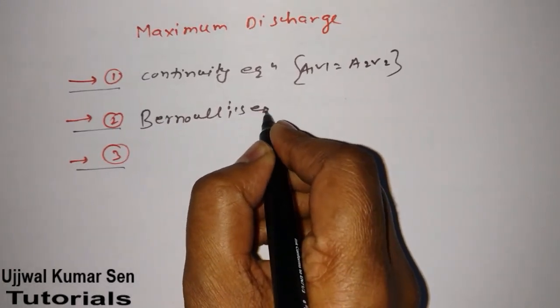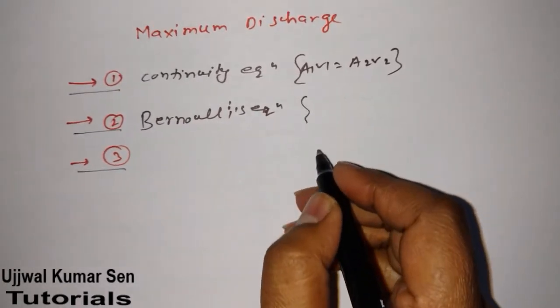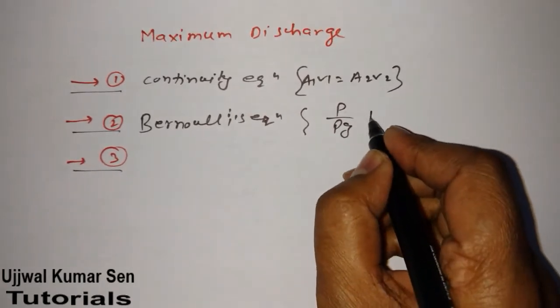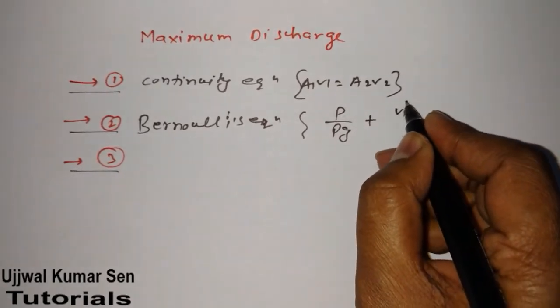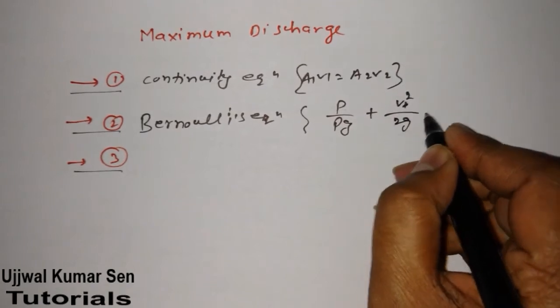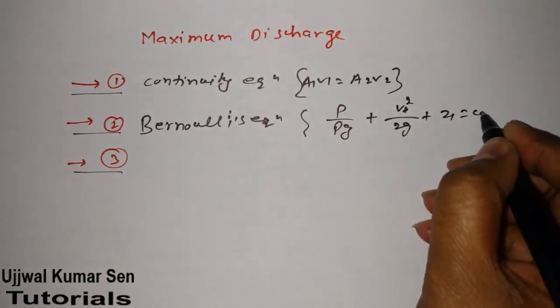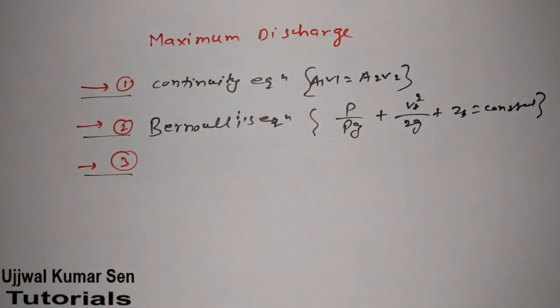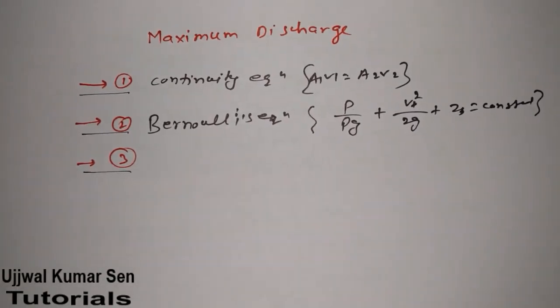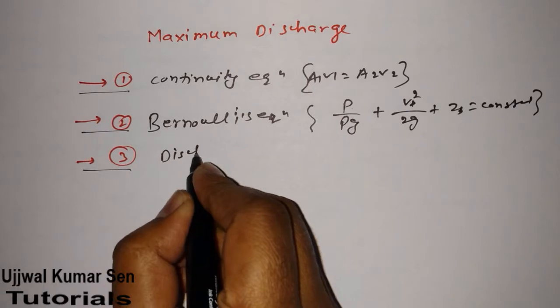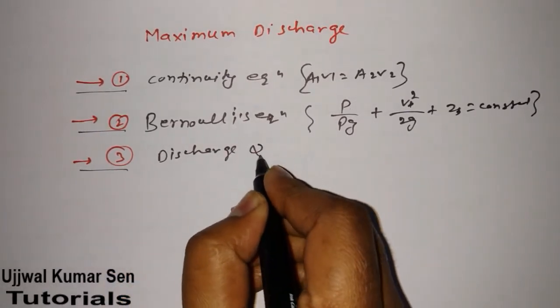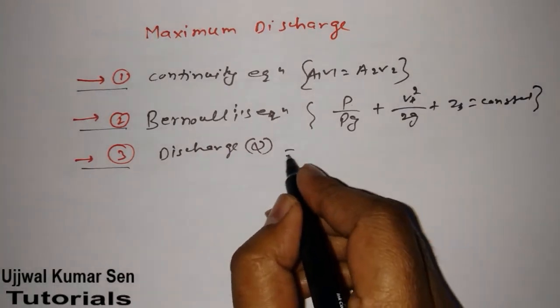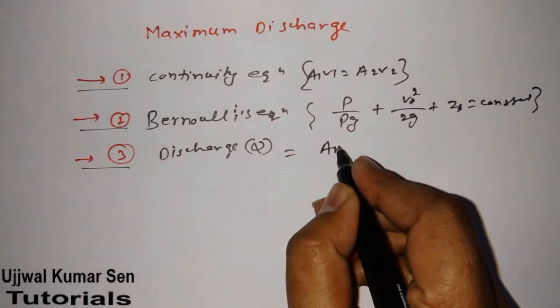Bernoulli's equation is P/(ρg) + V²/(2g) + z = constant. Next is the discharge formula. We denote discharge by Q, and the formula for discharge is A₁V₁ or A₂V₂.